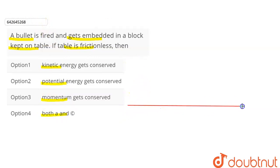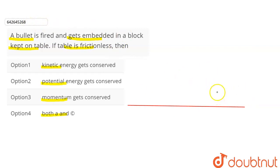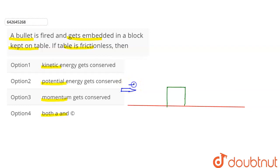Here is a diagram — this is a table, and the surface is frictionless. There is a block placed on the table. The question involves a bullet: a bullet is fired and takes a phase of motion. The speed of the bullet is given, and the bullet goes into the block.